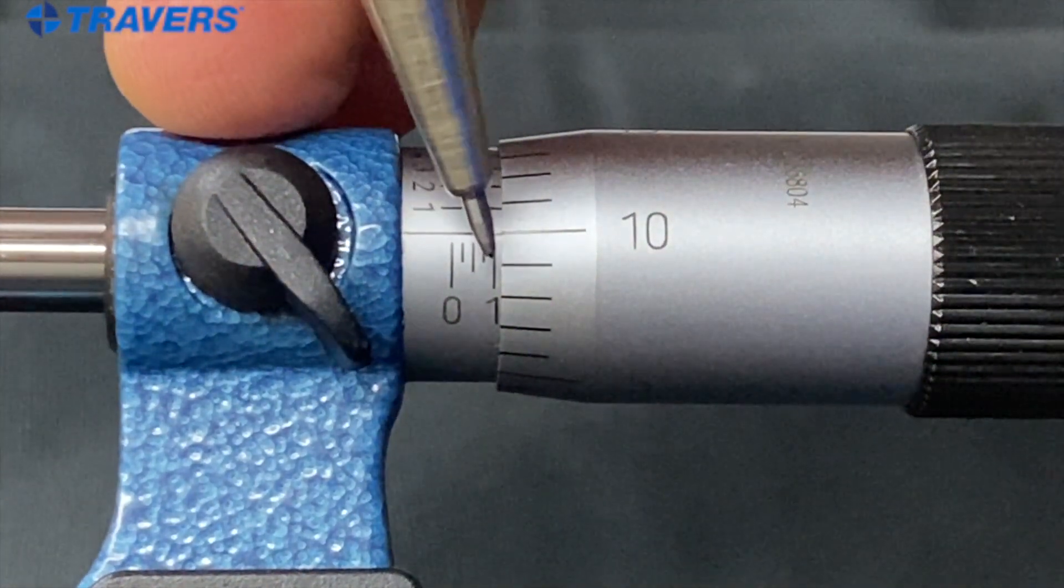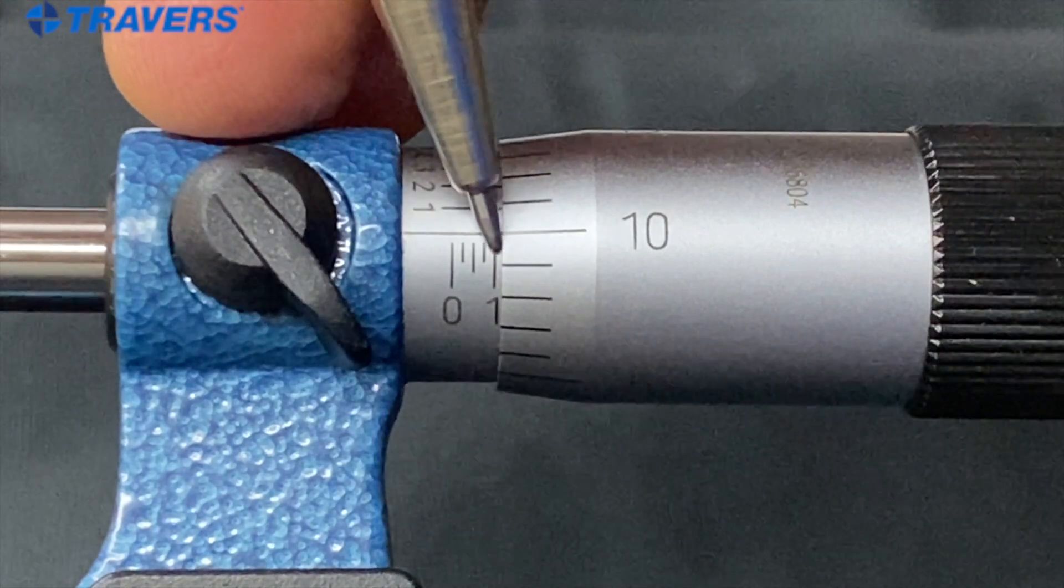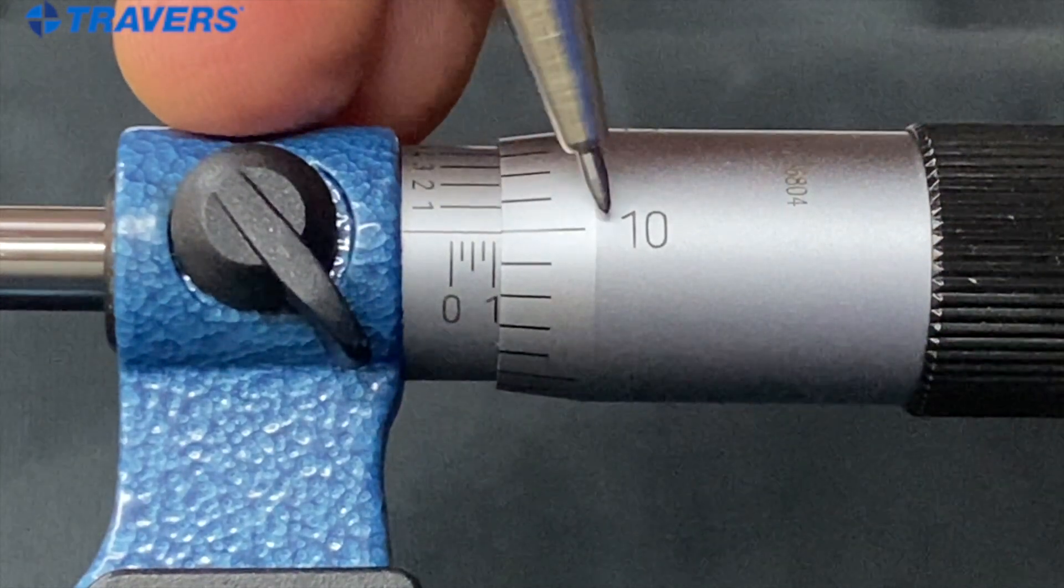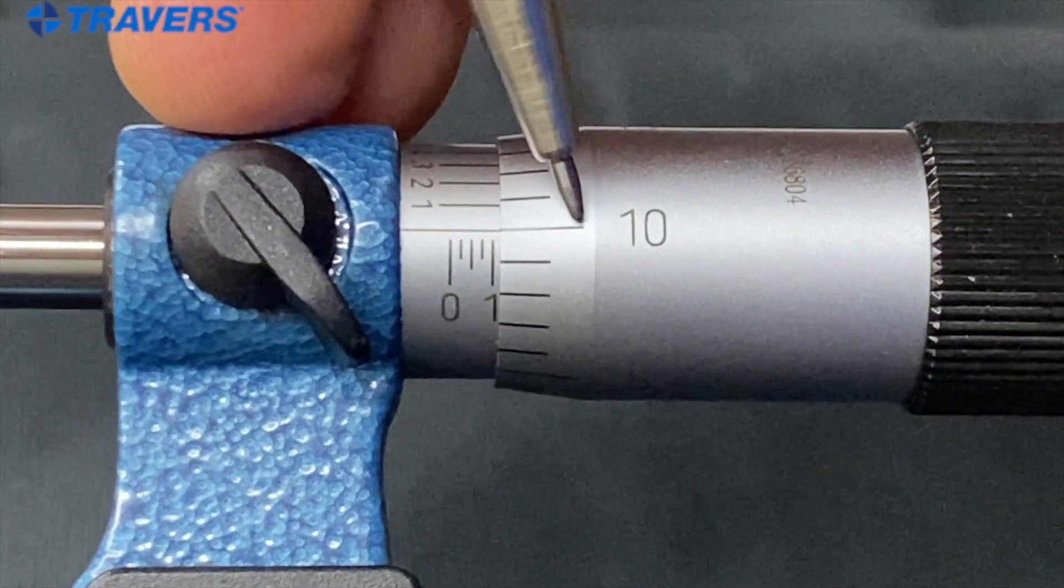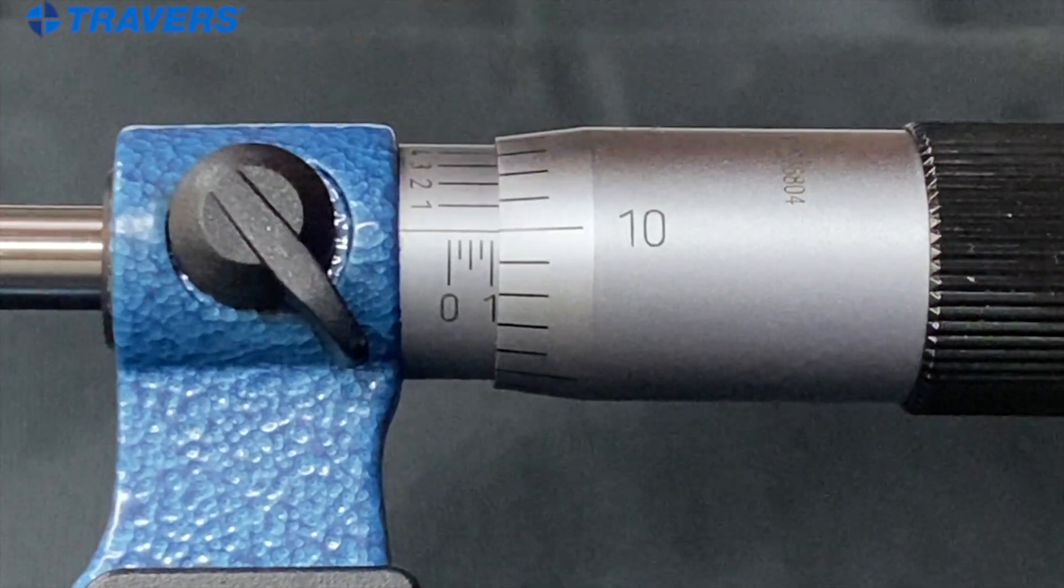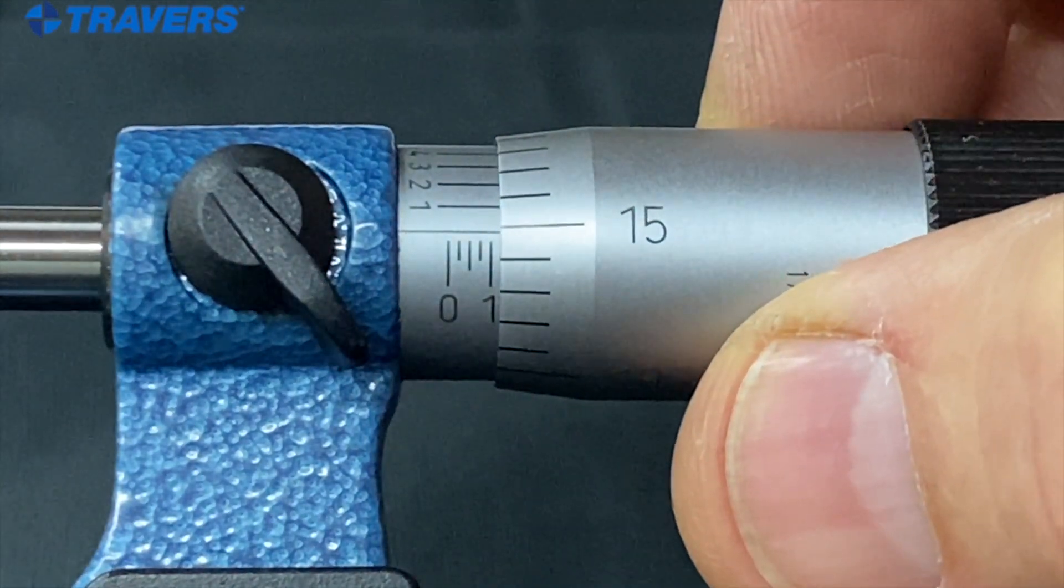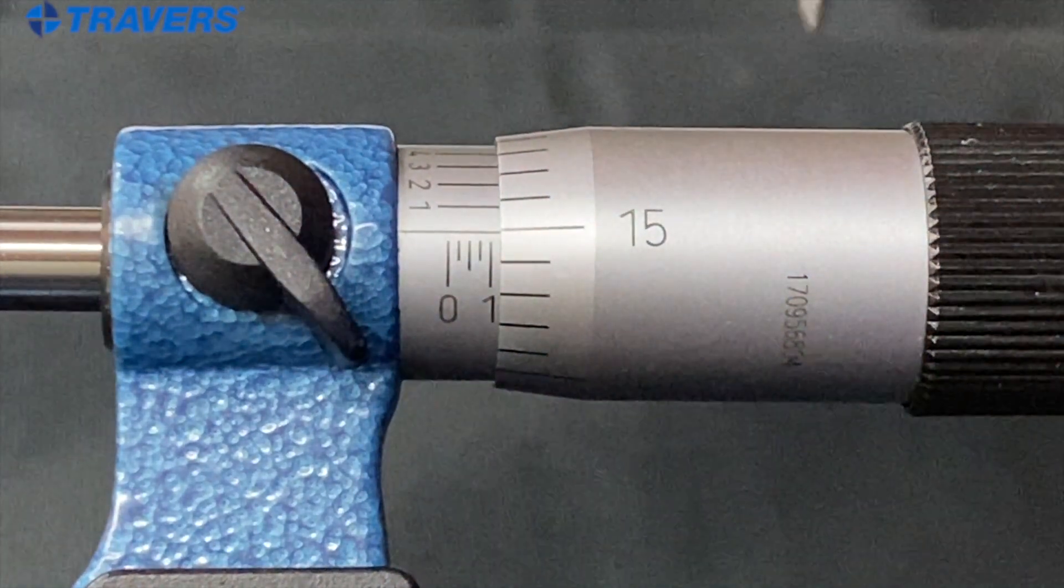So this is now, we know it's past a hundred thousandths by the lines on the sleeve. And now we have 10 up here on the thimble. So that's a hundred and ten thousandths. Likewise, this would be a hundred and fifteen thousandths.